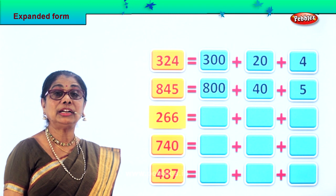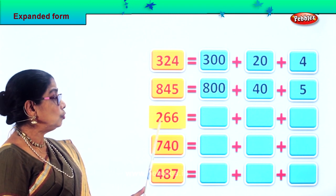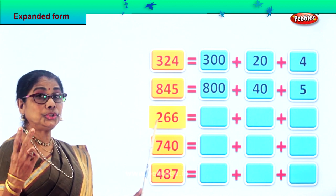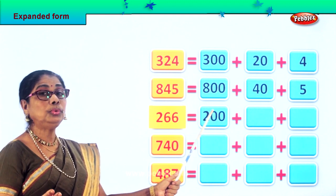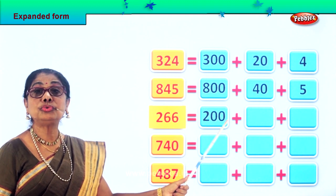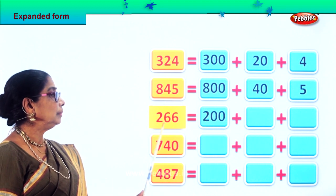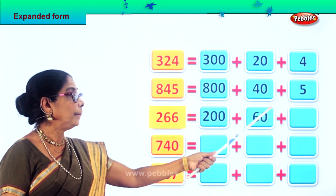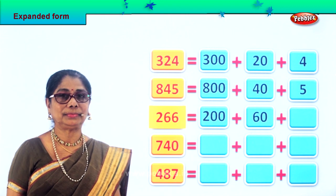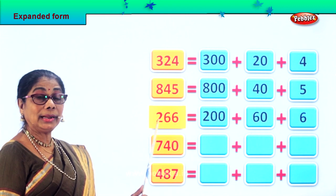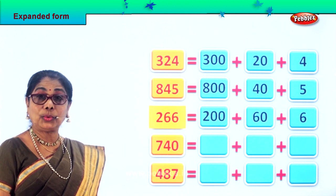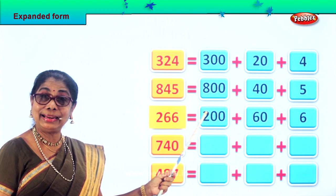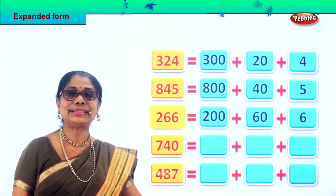The next number is 266 — six in the ones place, six in the tens place, two in the hundreds place. How many hundreds? Two — so two hundred. Plus six tens, that is sixty. Plus six ones. So 266 equals two hundred plus sixty plus six.